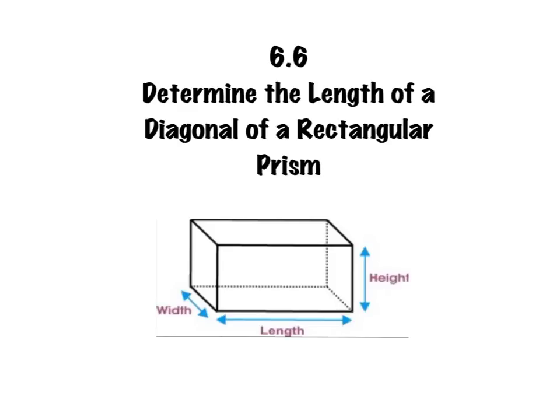This lesson is section 6.6, How to Determine the Length of a Diagonal of a Rectangular Prism.